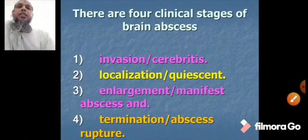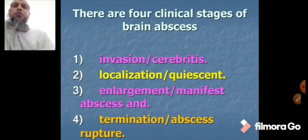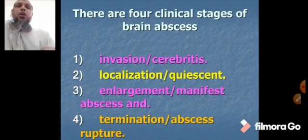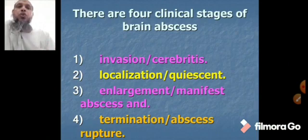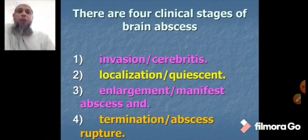There are 4 clinical stages of brain abscess. Number 1 is the invasion or cerebritis stage. Number 2 is localization or the quiescent stage. Number 3 is enlargement or the manifest abscess stage. Number 4 is termination or abscess rupture.